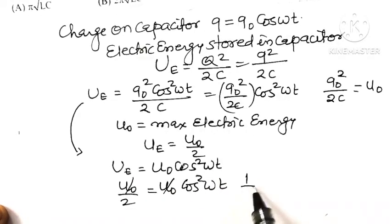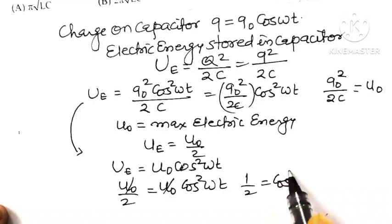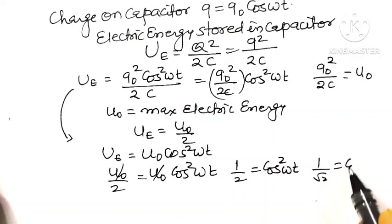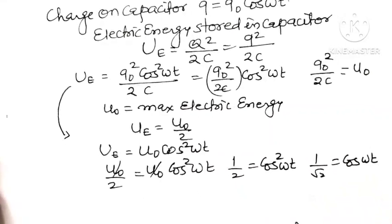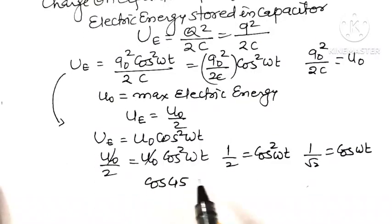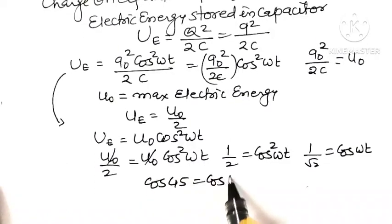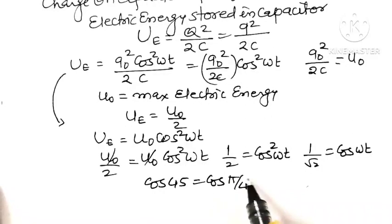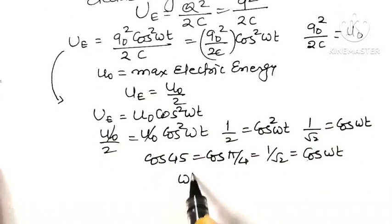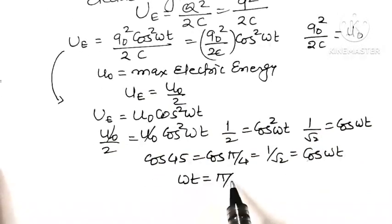The U0 on both sides cancels, giving 1/2 equal to cos squared(omega t), or equivalently 1 divided by root 2 equal to cos(omega t). Since cos(45°) equals cos(pi/4) equals 1 by root 2, we get omega t equal to pi by 4.